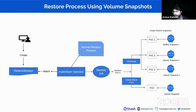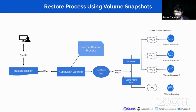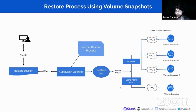For example, for volume snapshot 1, the restore job creates PVC1. For volume snapshot 2, the restore job creates PVC2. And for volume snapshot 3, the restore job creates PVC3. If you previously backed up a standalone PVC, the restore job targets that single volume snapshot and creates a single standalone PVC. This is how the restore process works using volume snapshots. Now let's move on to the next slide.